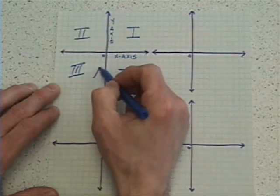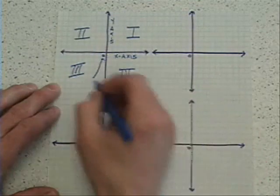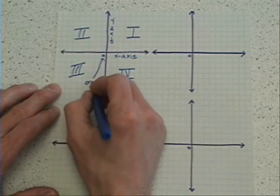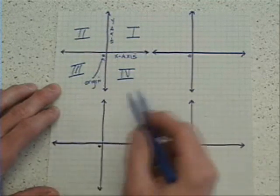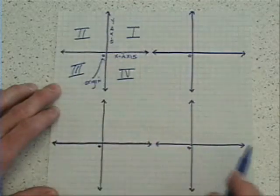The final piece to note is that you see the zero located right here. Oftentimes, I'll indicate that is my origin. I'll use a zero to indicate that that's where the two lines, or my x-axis and y-axis cross.